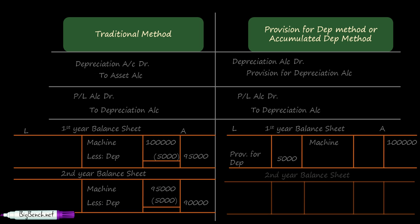In the next year, machine will still appear at ₹1,00,000 under the provision for depreciation method, and the provision for depreciation account balance will increase to ₹10,000 after charging the second year's depreciation. So we have learned the journal entries under both the methods.